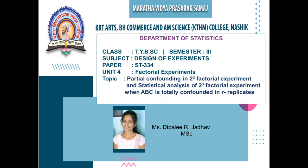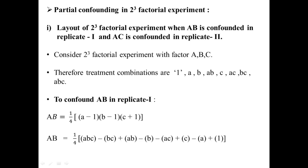First we will discuss partial confounding in a 2³ factorial experiment. In partial confounding, from a particular replicate we delete the effect of that interaction effect. This is the layout of the 2³ factorial experiment when AB is confounded in replicate 1 and AC is confounded in replicate 2. Here we consider only two replicates: in replicate 1 ABC is the confounded effect, and in replicate 2 AC is the confounded effect.